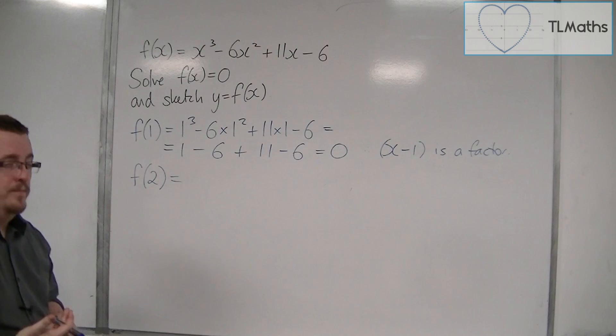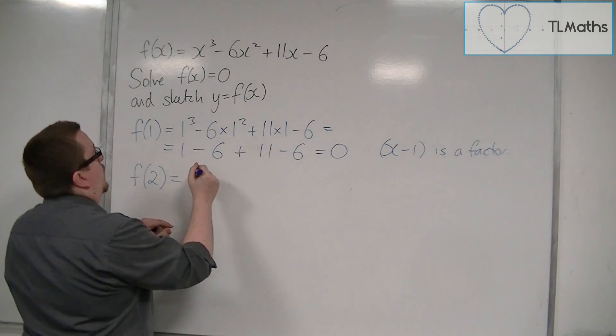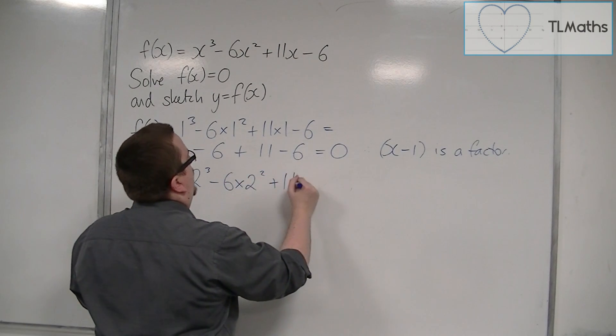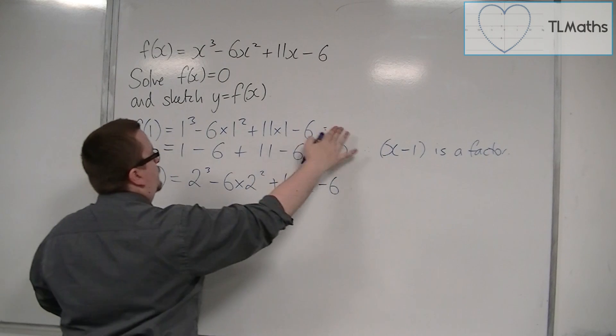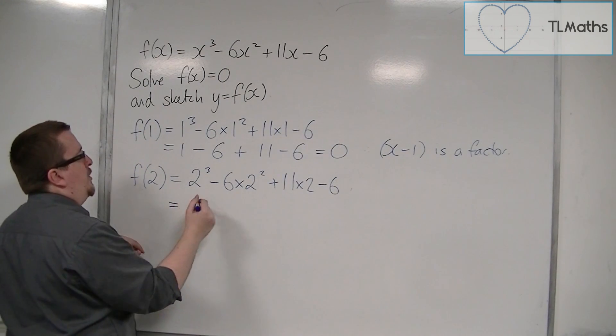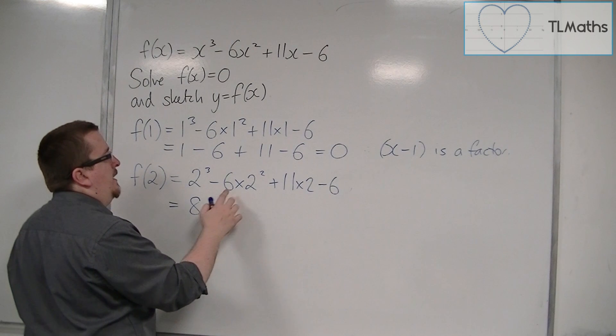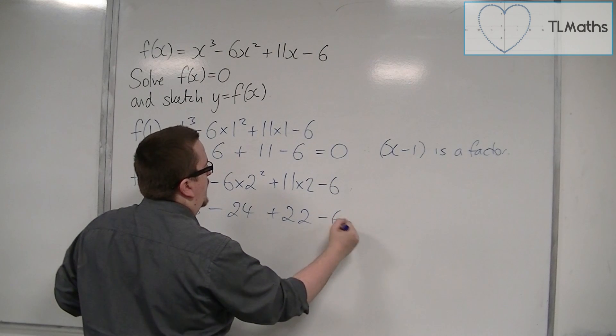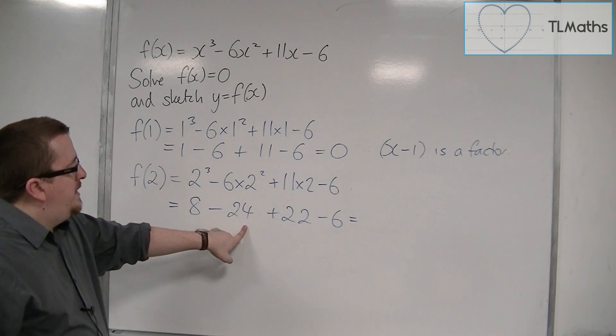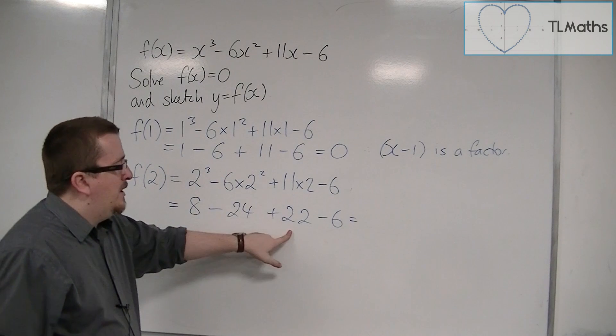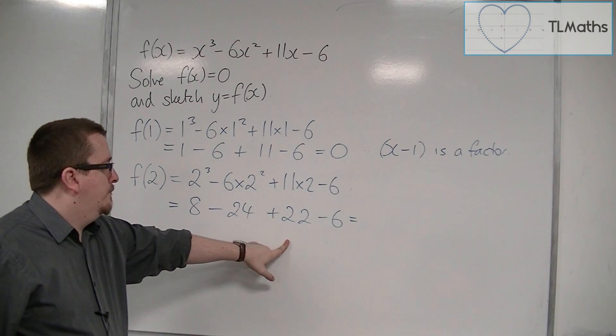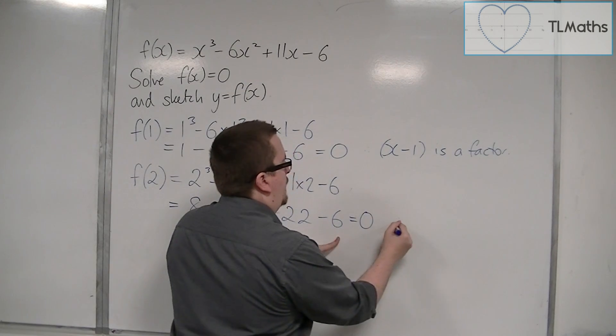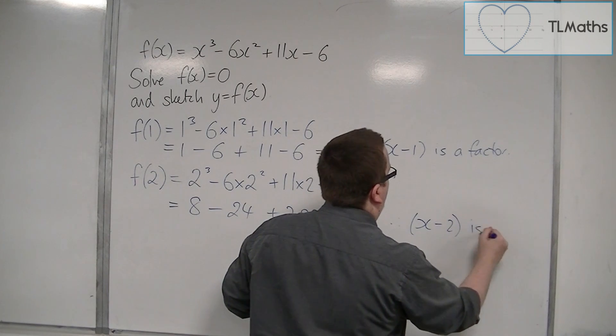Let's try f of 2. So f of 2 would be 2 cubed take away 6 lots of 2 squared plus 11 lots of 2 take away 6. So we've got 2 cubed, that's 8, take away 6 lots of 2 squared, so 6 lots of 4, so that's minus 24, plus 22 take away 6. 8 take away 24 is minus 16, plus 22 gets me 6, take away 6 is 0. So therefore x minus 2 is a factor.